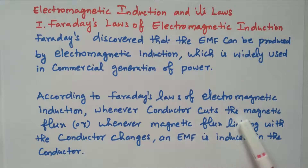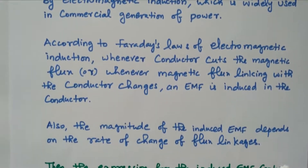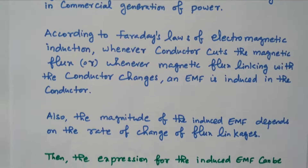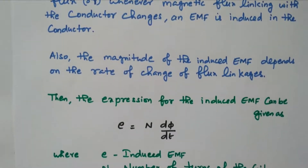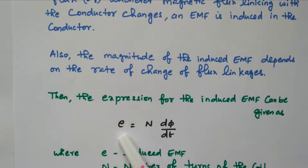There is a magnetic flux and there is a rate of change of magnetic flux. If there is any rate of change of magnetic flux, then the EMF will be induced — that is what Faraday discovered. The expression for induced EMF is E equal to N dφ/dt. The rate of change of flux will induce the EMF.